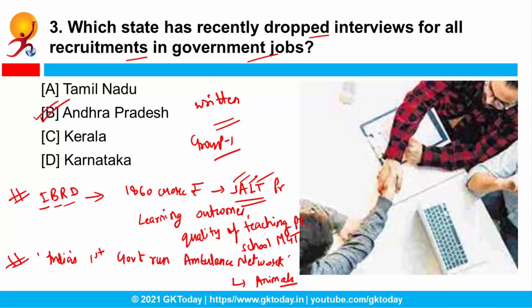The animal ambulance network decision was taken to further boost the animal husbandry and veterinary sector in the state. Andhra Pradesh is also the second state to implement power sector reforms put forward by the Department of Expenditure, which comes under the Ministry of Finance.